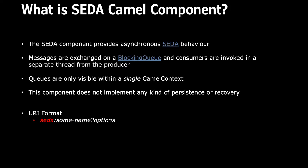The URI format — in Camel, everything is a URI whether you are defining a consumer or a producer. The URI format for SEDA is: 'seda:' followed by a name for that particular consumer or producer endpoint. There are also some options you can use, which we will look at shortly.